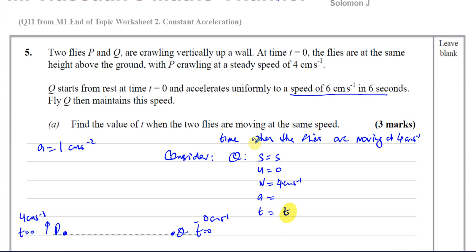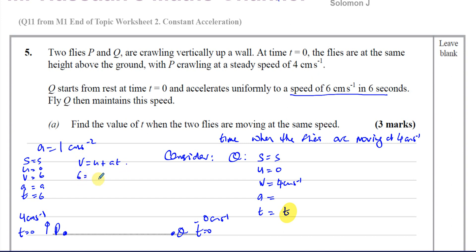We can confirm using SUVAT for that situation: S unknown, U is 0, V is 6 cm per second, T is 6 seconds. Using V = U + AT: 6 = 0 + A×6, so A = 1 cm per second squared.